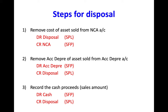The double entries for a disposal are split into three parts. The first is to remove the cost of the asset sold from your non-current assets account. You debit the disposal account, which goes to the profit and loss, and you credit the non-current assets. Non-current assets carry debit balances in the statement of financial position, so to remove the cost we credit the non-current asset.